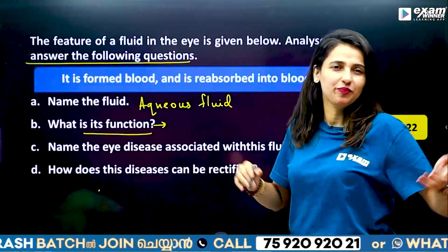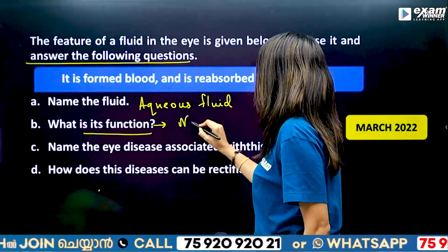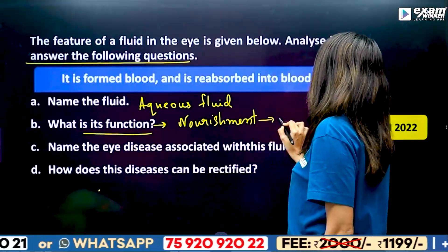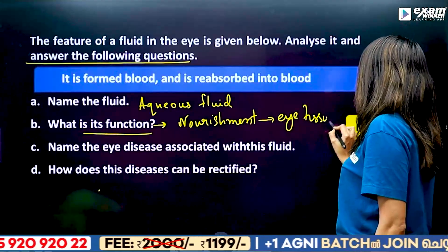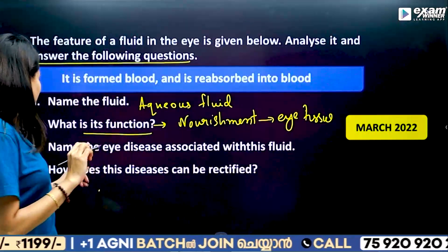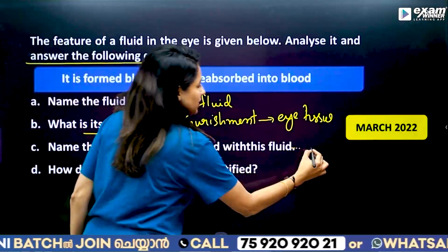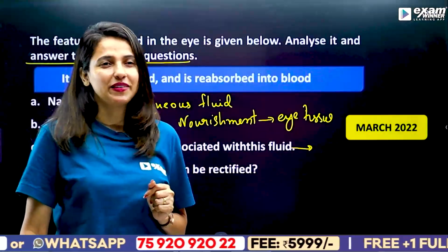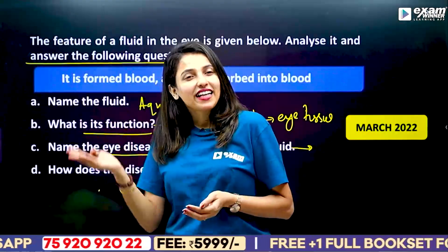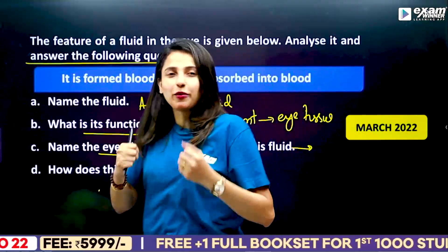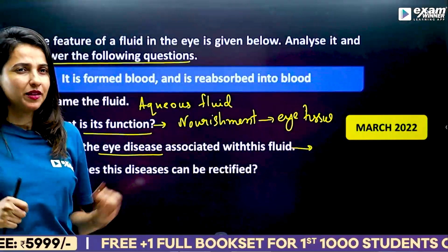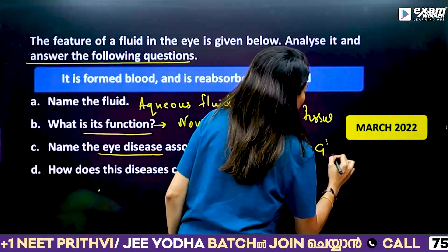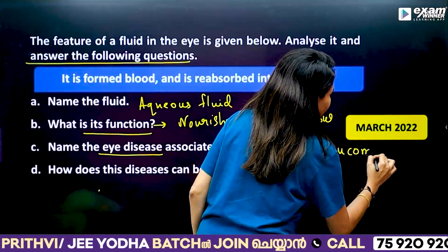What is its function? The function is nourishment — providing nutrients and oxygen to the eye tissues. Now, name the eye disease associated with this fluid. That disease is Glaucoma.